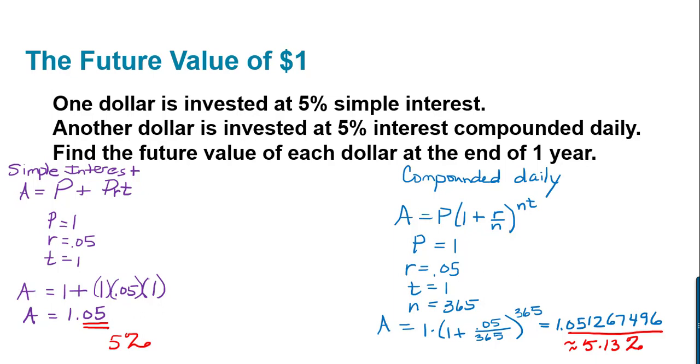On the other hand, if another dollar is invested at 5% interest compounded daily, you're going to get a little bit more because it has a bunch of compounding periods where interest accumulates upon interest. In blue, I've calculated the future value of that dollar. Again, the principal is $1, the interest rate that's stated is $0.05, and the time one year, but we have to take into consideration those 365 times the compounding occurs.